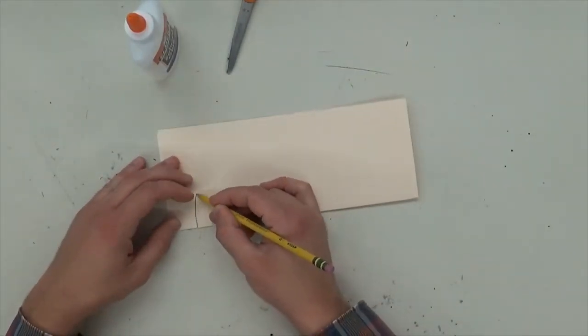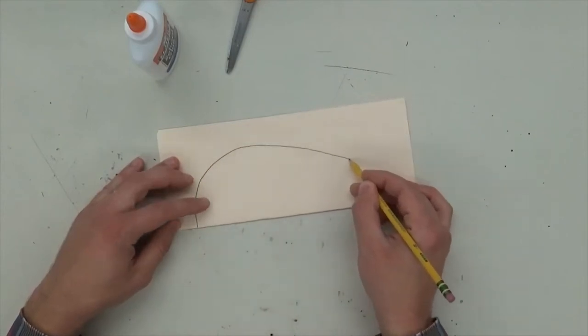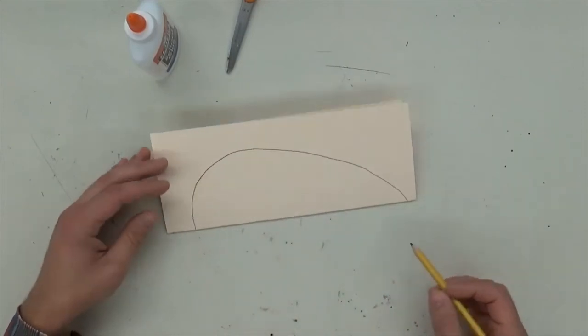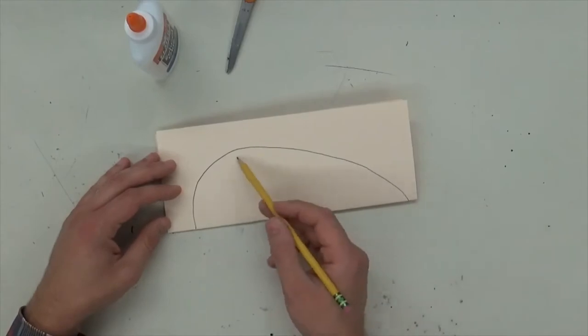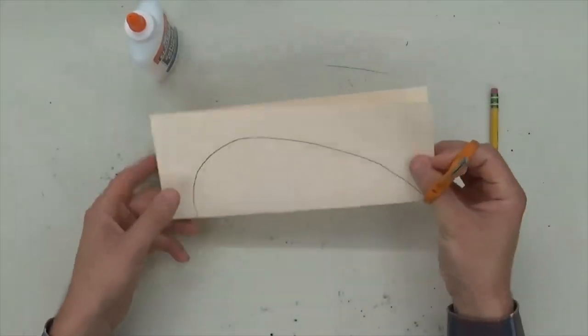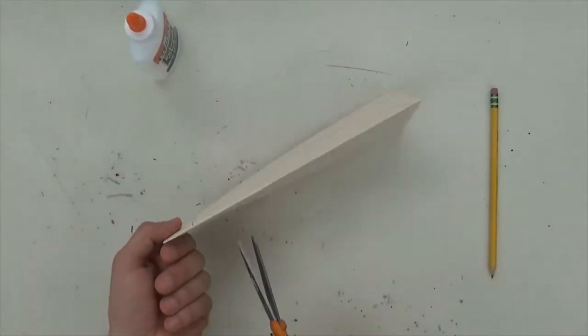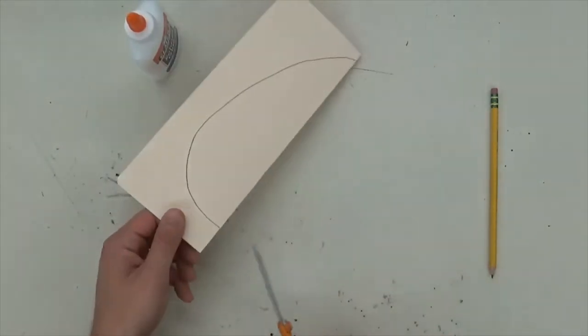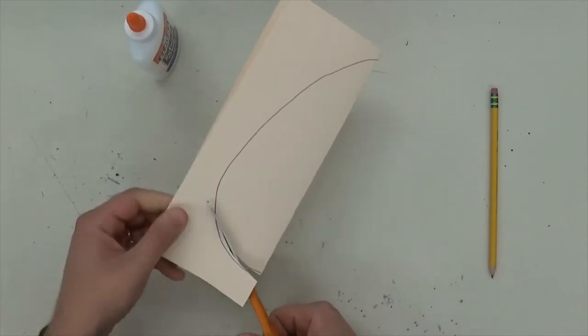I kind of like the Dan masks so I'm gonna cut a shape like that. They're kind of pointy at one end and round at the other. You don't have to draw a line but just know that you're gonna cut through the folded part and you can always change the shape as you go.